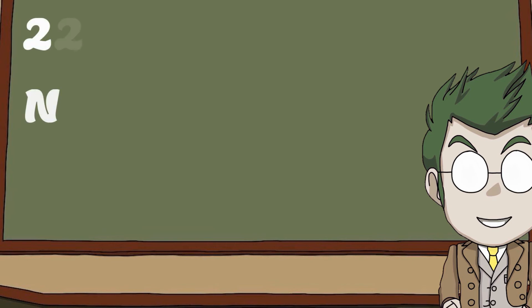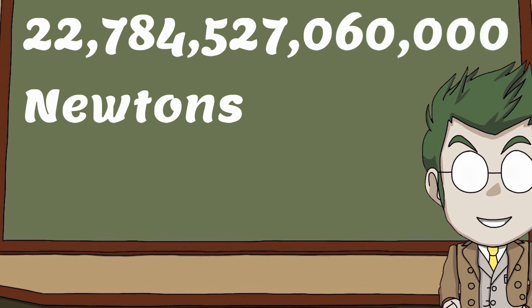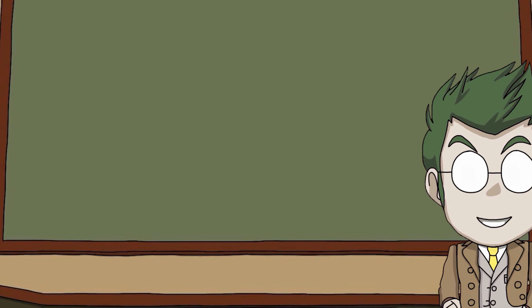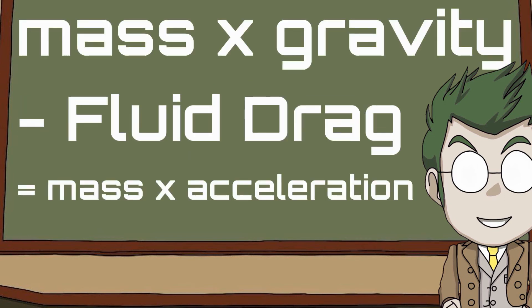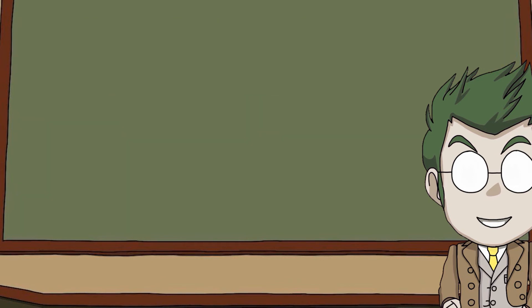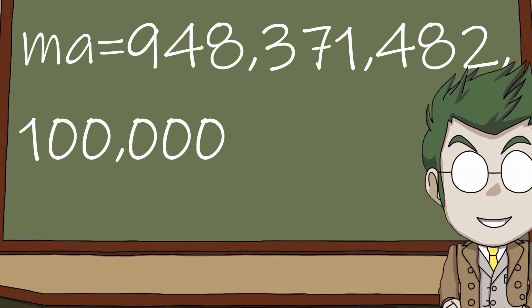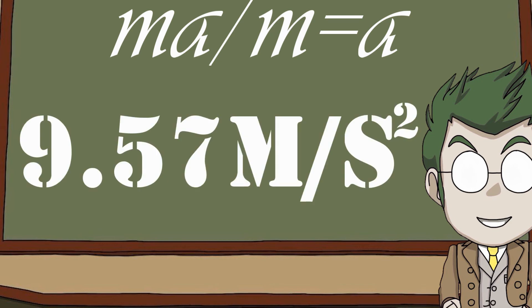Put it all together and we get 22,784,527,060,000 newtons. And here's where it comes in useful. That acceleration is what we need because that's the acceleration of Atlas with air resistance. So putting in the numbers, we get MA to be 948,371,482,100,000. And if we divide MA by M, we get A — giving us an acceleration of 9.57 meters per second squared.